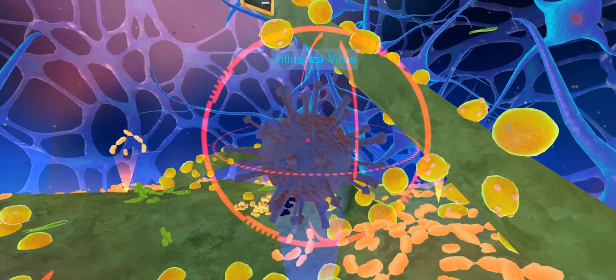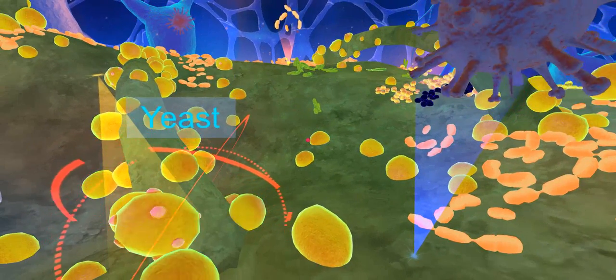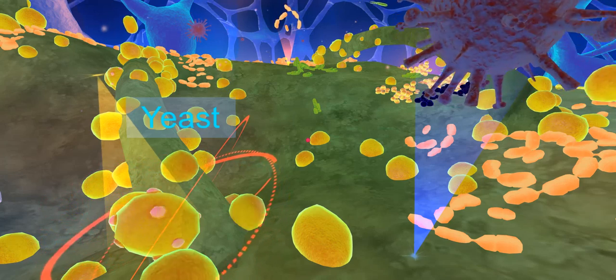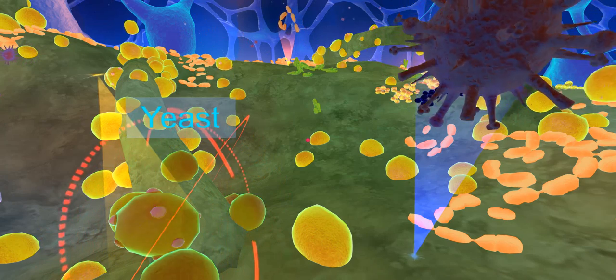For example, yeast is used in baking bread and making beer through the process of fermentation. Fermentation occurs when carbon dioxide is released when activated.